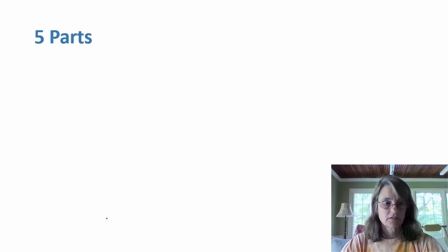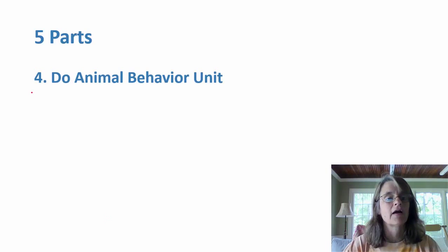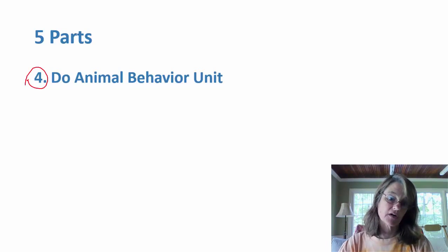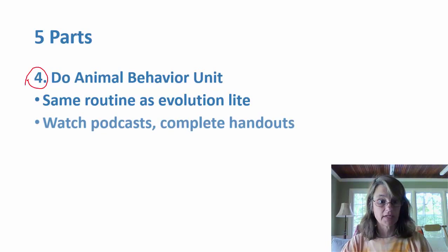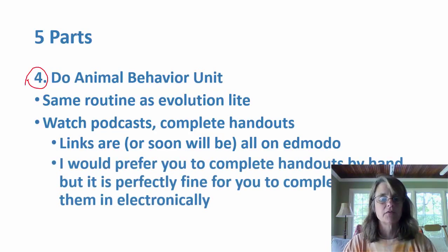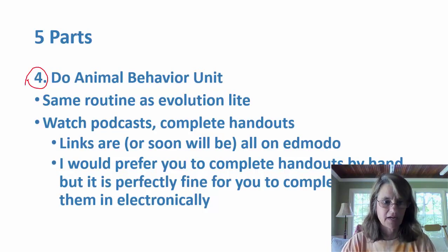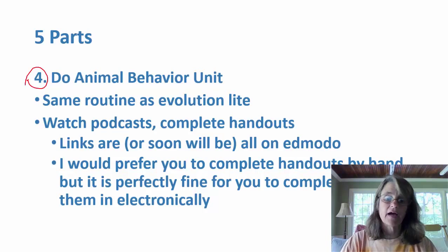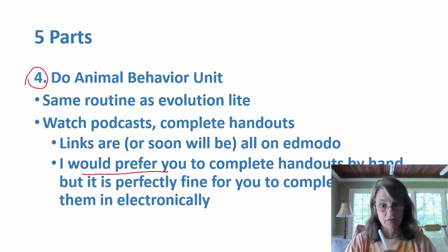So that's three parts: Evolution Light, Edmodo group, and reading. The fourth part is to do our animal behavior unit — this is what will take up most of your time. This is where we'll jump in when we start the year. It's the same routine as the evolution podcasts: watch podcasts and complete handouts, just more of them and they're longer. The links will be on Edmodo. I prefer handwritten handouts, but it's a lot to print, so electronic is okay too.